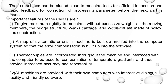A map of systematic errors in the machine is built up and fit into the computer system so that error compensation is built into the software. Every instrument has some systematic errors — the systematic errors of the CMM can be fed into the computer programming so that when measuring, systematic errors are automatically compensated. For example, if a 10 mm standard sphere reads 10.001 mm, the 0.001 mm systematic error is fed into the computer so it is compensated during measurement.